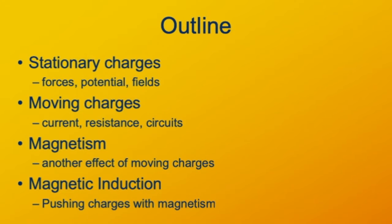This is a rather large unit. I'm going to step you through our outline of the unit as a whole. Today's lecture we'll talk about stationary charges and how they interact. Then about moving charges, several consequences of moving charges, specifically creating circuits, and then another consequence of moving charges, which is magnetism.